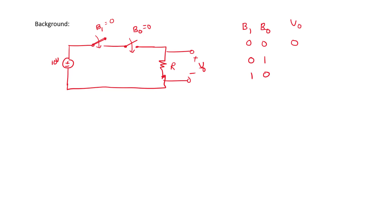In that case, output is also 0. Only when both switches are closed — both inputs are logic 1 — is the 10V source directly connected to resistance R, making V0 equal to 10 volts, which is logic 1. So this series switch configuration implements an AND gate.